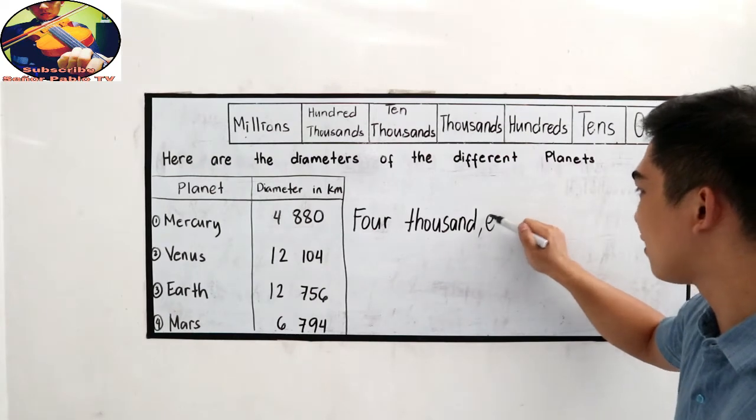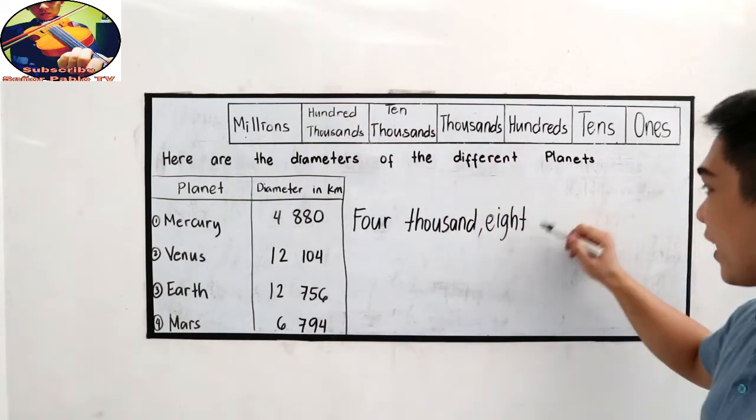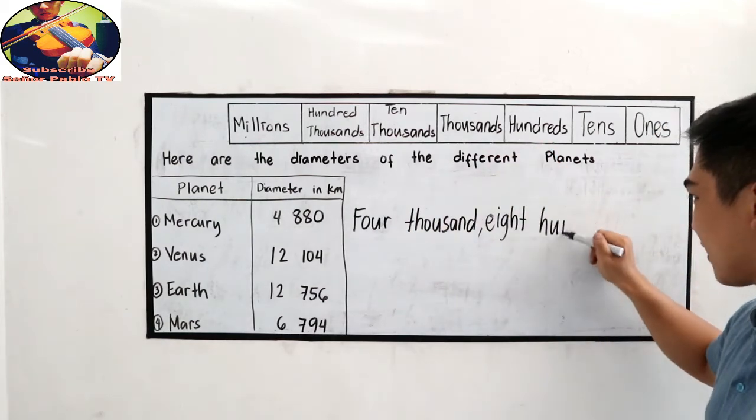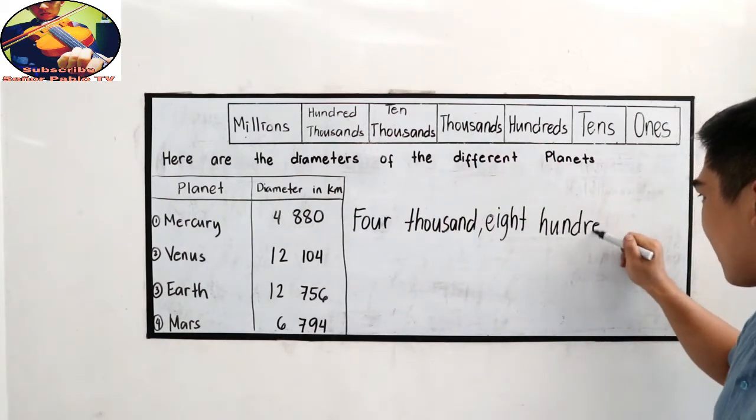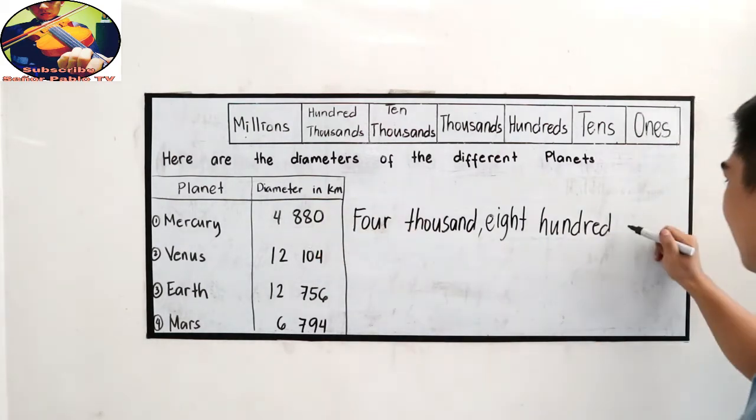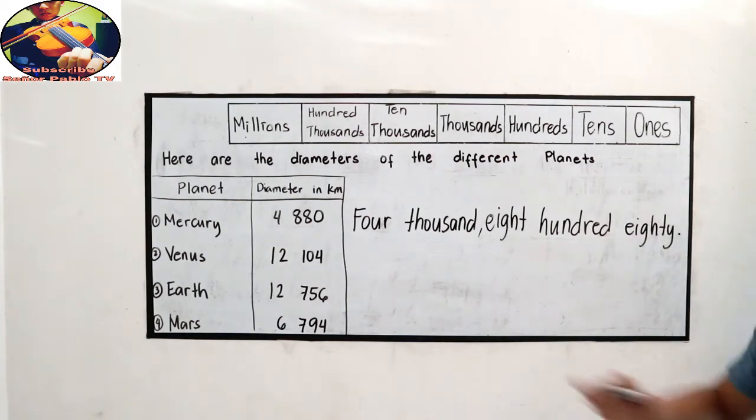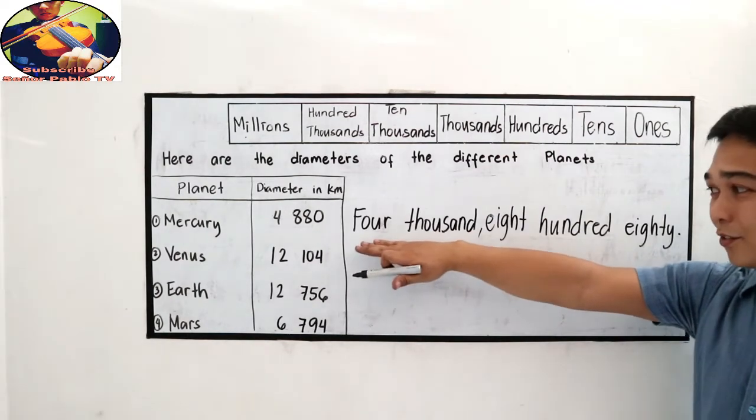Then we need to write a comma, eight hundred eighty. Again, please read: four thousand eight hundred eighty.